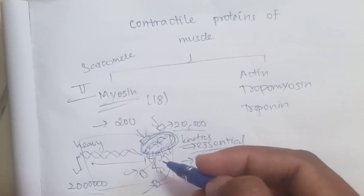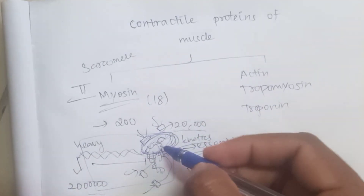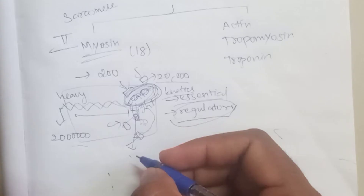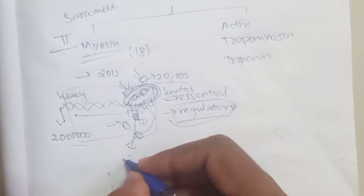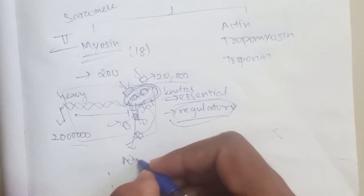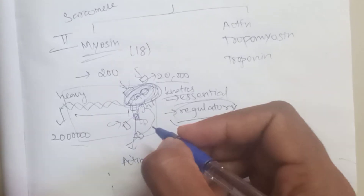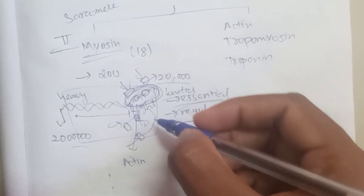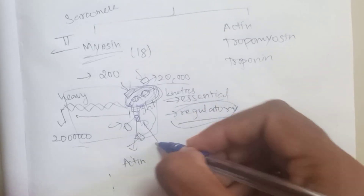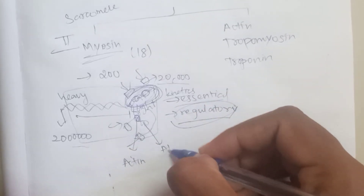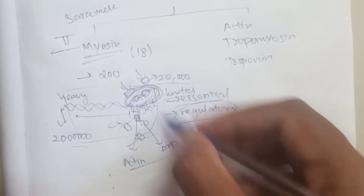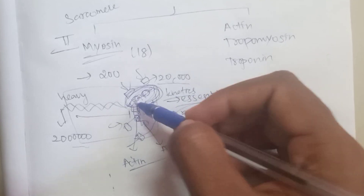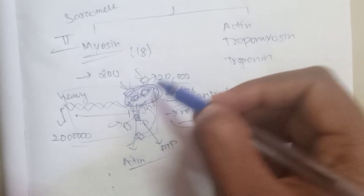The myosin head has 4 attachment sites. One side is for the actin filament - so the actin filament attaches here. Another site is for the ATP molecule. So the 4 attachment sites bind actin and the actin molecule.